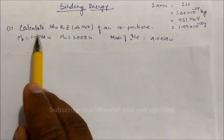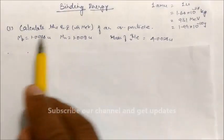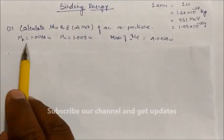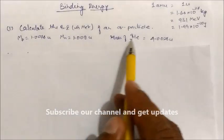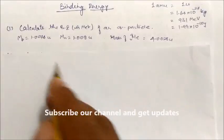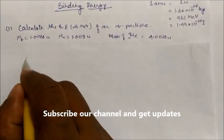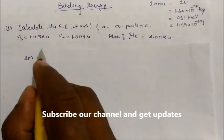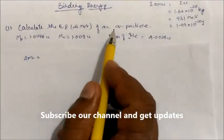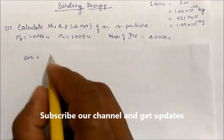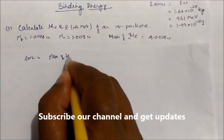This question asks us to calculate the binding energy in MeV of an alpha particle. The mass of the proton, neutron, and the actual mass of the helium atom are given. We will start with the mass defect. The theoretical mass of the alpha particle is the mass of the helium nuclei, which is helium-4.